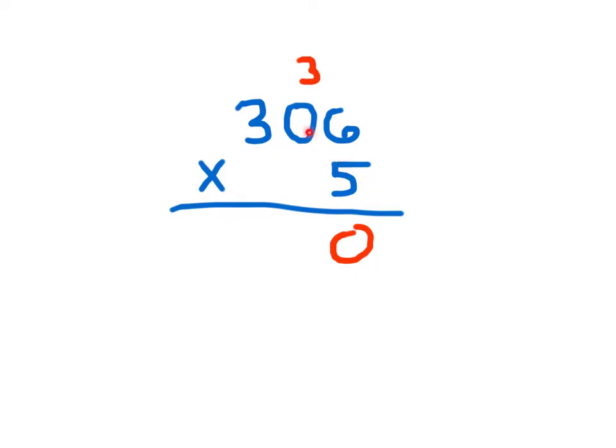5 times 0 is what you do next, which is 0, plus 3, which is 3. Oftentimes, students might get a little confused there. They might accidentally place the 3 all the way to the 100's place, or they might actually multiply the 5 times the regroup. What you do, again, is you multiply the 5 times the 0.